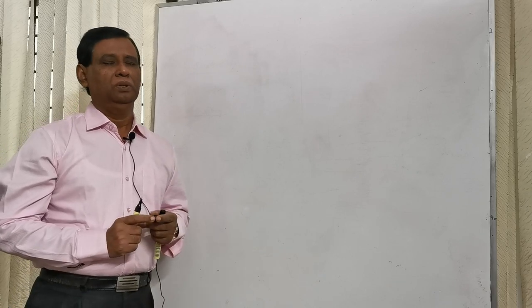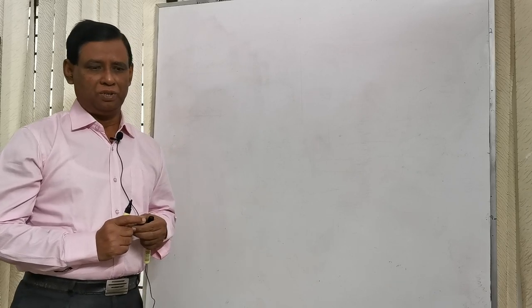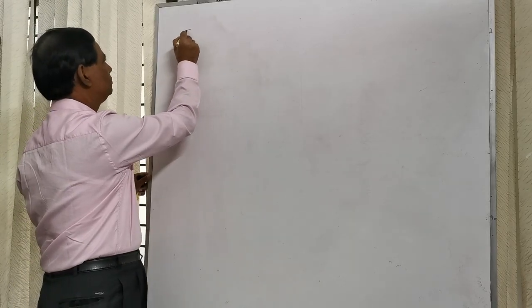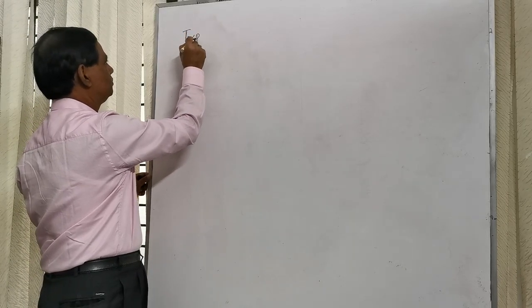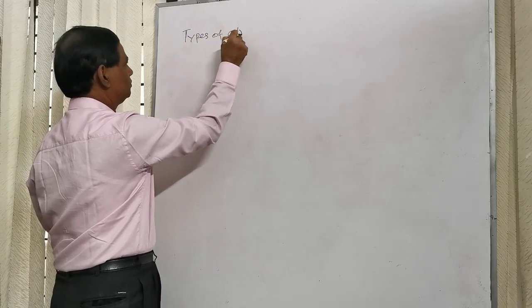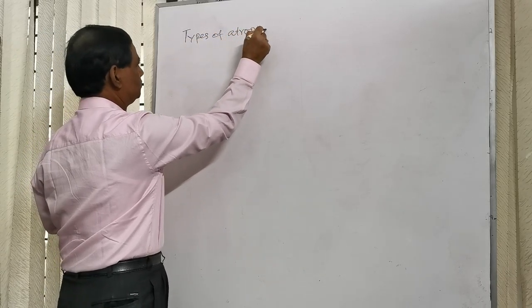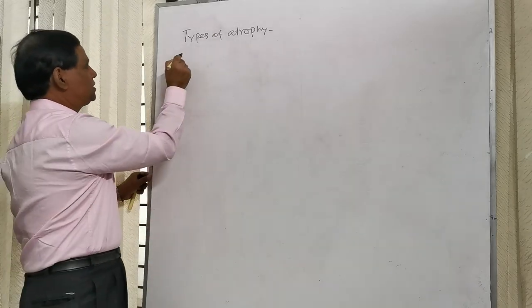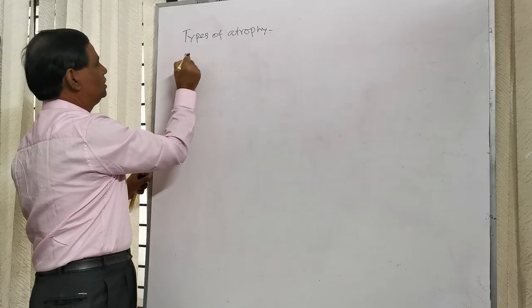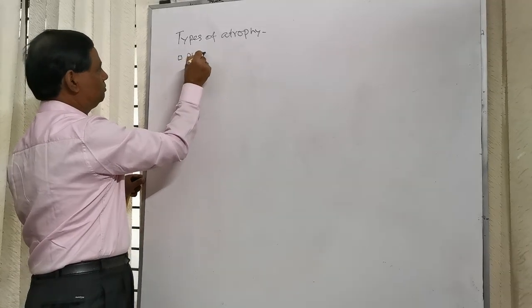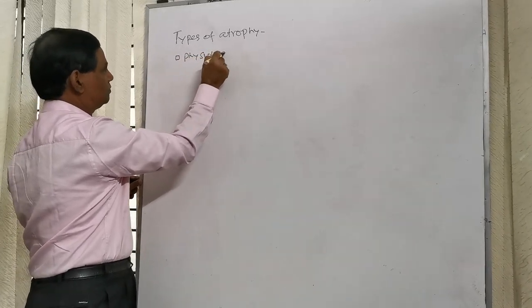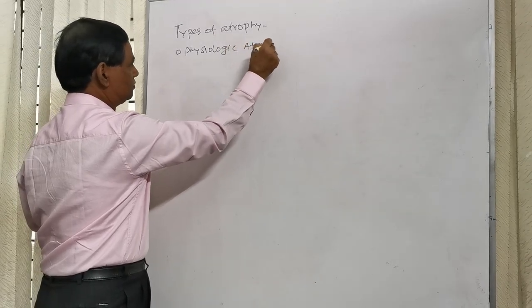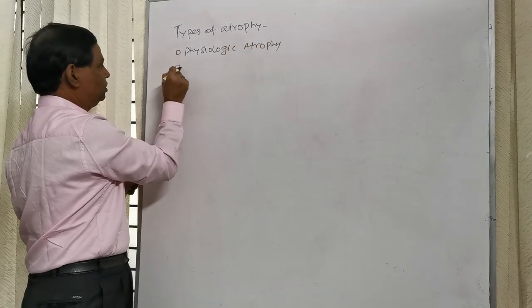Now, what are the types of atrophy? Types of atrophy: it is physiologic atrophy and pathologic atrophy.